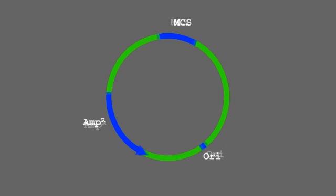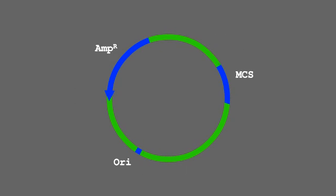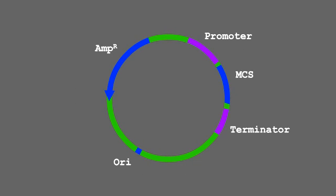In many vectors, the multiple cloning site is surrounded by sequences of a promoter and terminator that guide the expression of inserted genes after the vector is introduced inside a cell.